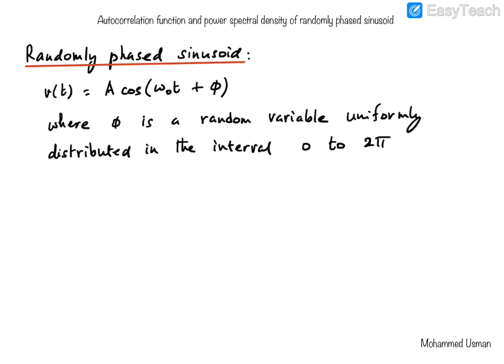A randomly phased sinusoid is a sinusoidal function whose phase is a random variable. The phase phi is a random variable uniformly distributed in the interval 0 to 2π. Such a random signal is encountered in communications quite regularly because when a signal is transmitted after modulation, it undergoes a random amount of delay in the transit time between the transmitter and the receiver, and therefore has some random phase shift.